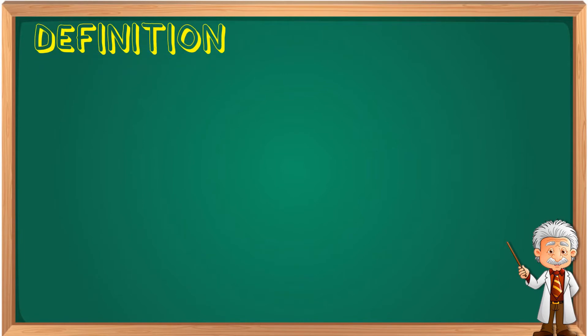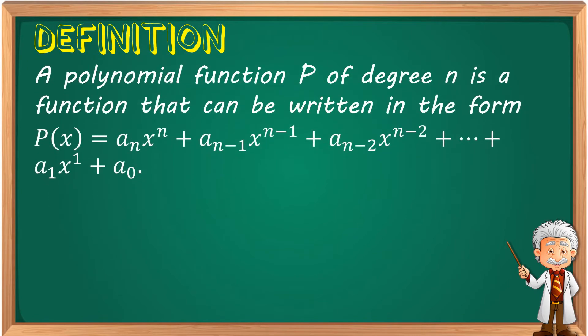Let's start with the definition of a polynomial function. A polynomial function P of degree n is a function that can be written in the form P(x) = aₙx^n + aₙ₋₁x^(n-1) + aₙ₋₂x^(n-2) plus an ellipsis indicating that there are some terms here plus a₁x¹